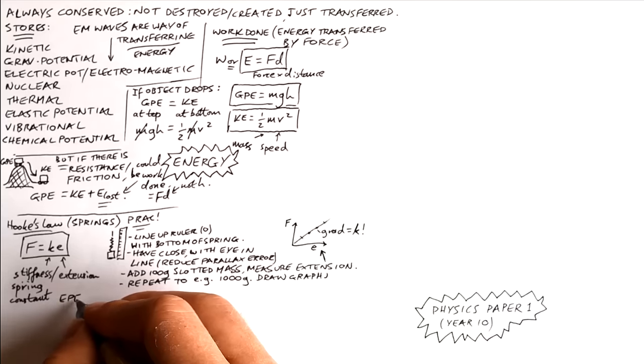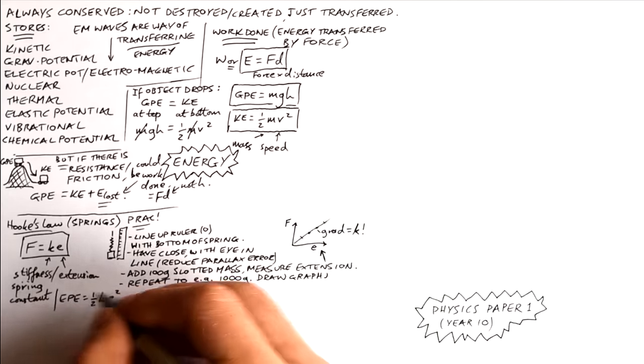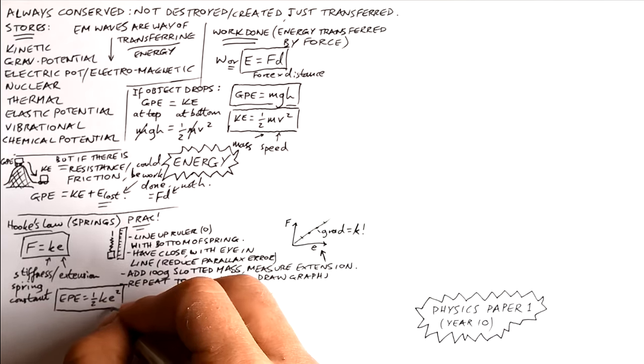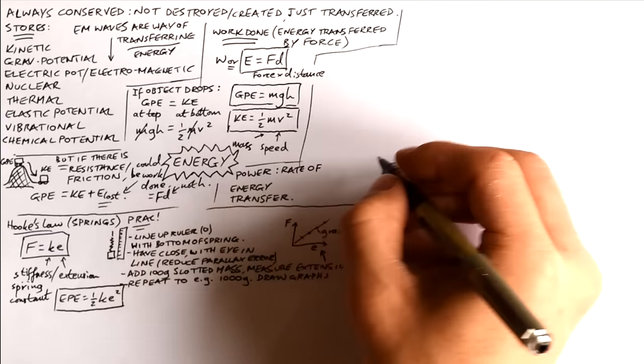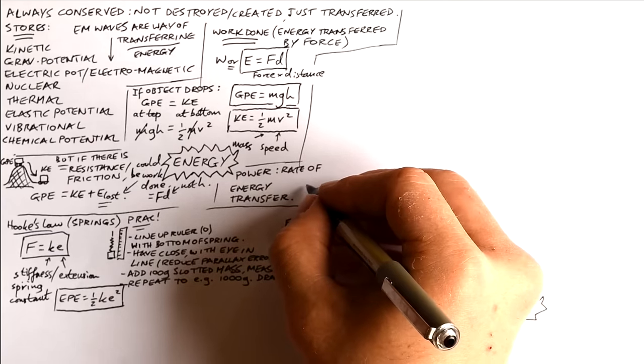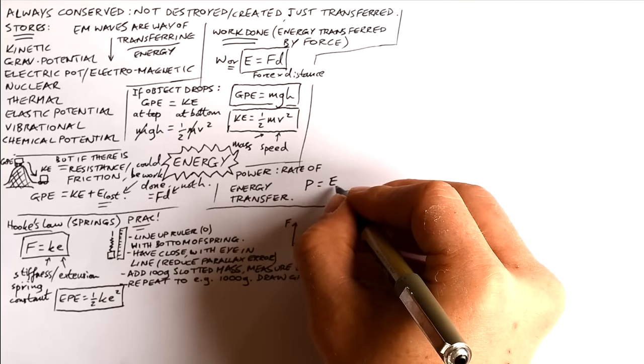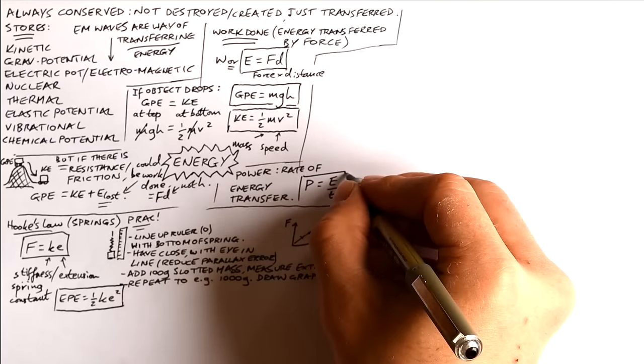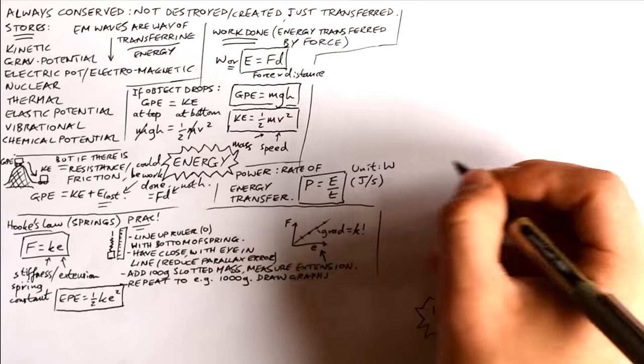And we have an equation for the energy stored in the spring. Elastic potential energy is equal to half KE squared. So a way of remembering it is that it's similar to the kinetic energy equation. Just make sure you get the right letters. Power is the rate of energy transfer. In other words how many joules are being transferred per second. So you should be able to figure out what the equation is. Power equals energy divided by time. You could say work done divided by time. So P equals E divided by T. The unit is watts but that's the same as joules per second.